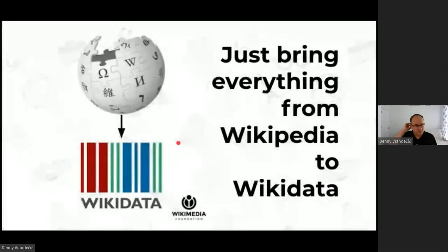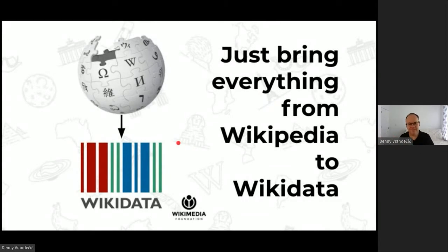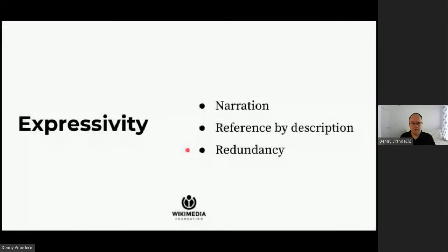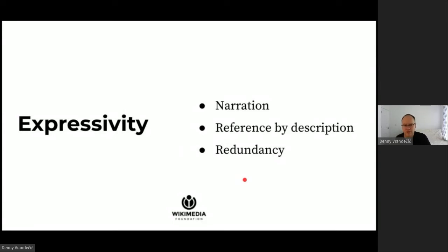So the solution seems simple — all we need to do is bring everything from Wikipedia into Wikidata and we're done. Unfortunately, it doesn't work out. There are three main limitations we identified that don't work well in Wikidata: narration, reference by description, and redundancy.